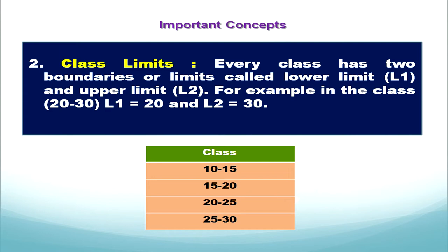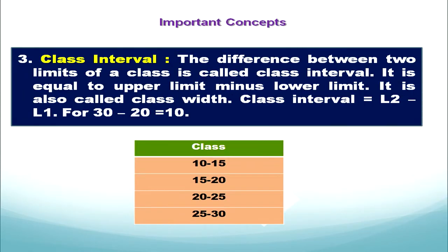Now let's discuss the third concept: class interval. The difference between the two limits of a class is called class interval — that is, the gap between the lower limit and upper limit. We can calculate it by subtracting the lower limit from the upper limit. For the class 10 to 15, upper limit 15 minus lower limit 10 gives a class interval of 5.